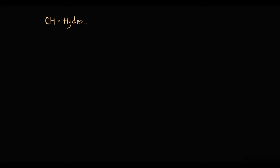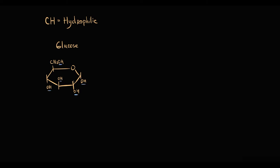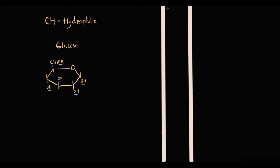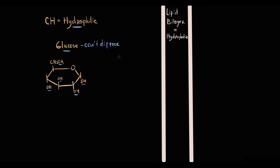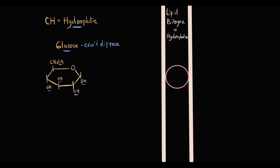Carbohydrates are hydrophilic molecules. For example, glucose has a lot of hydroxyl groups that make it a highly hydrophilic molecule. The cell membrane is composed of a lipid bilayer which is hydrophobic, so hydrophilic molecules like glucose cannot diffuse through the hydrophobic cell membrane. Because of that, transportation of glucose requires specific transporters.